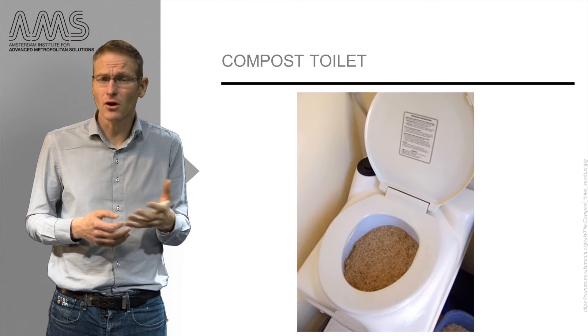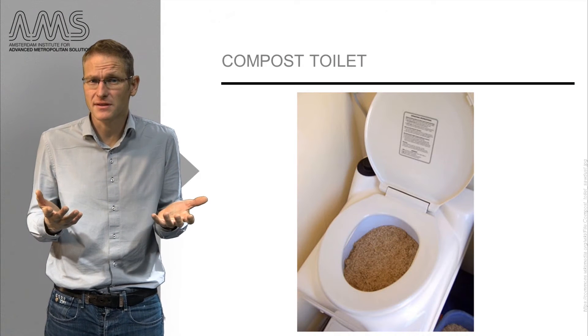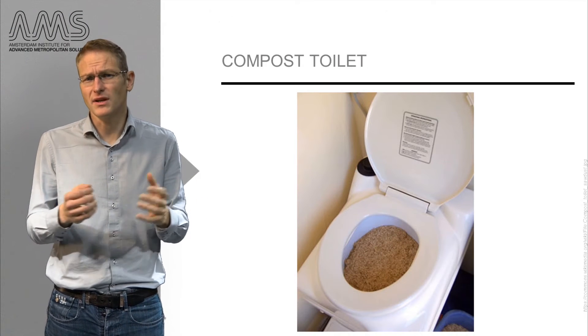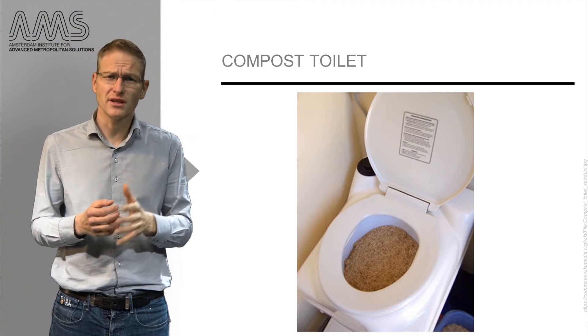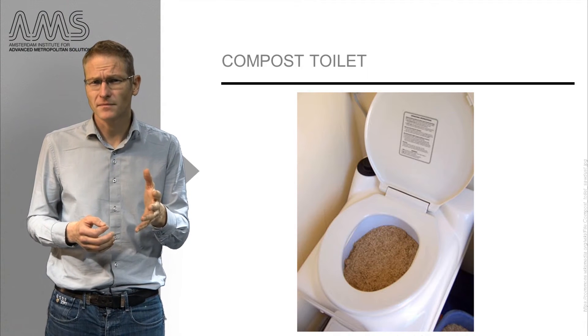It gets even better: if you collect gray water separately from black water, you also reduce the dilution of your feces with water. If you can also reduce the flushing volume of your toilet, you can for instance compost your feces. This compost not only contains nutrients but also carbon.